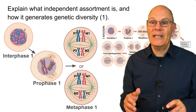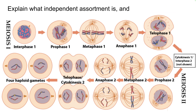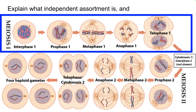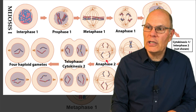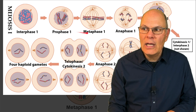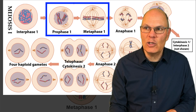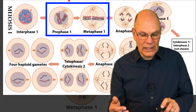Let's explain what independent assortment is and how it generates genetic diversity. Note that the phases of mitosis and meiosis have the same names, but because there are two cell divisions in meiosis, we give them a suffix. In meiosis, there's interphase 1 followed by prophase 1, metaphase 1, then cytokinesis, interphase 2, prophase 2, metaphase 2, anaphase 2, etc. The key events we're going to talk about happen between prophase 1 and metaphase 1 — that's where independent assortment really takes place.